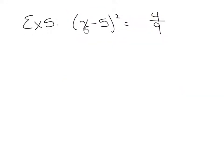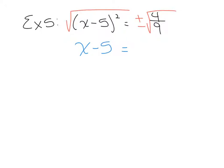Example 5: solve using the square root method. We have (x−5)² = 4/9. The square is isolated, which you should always check before applying the radical. We put the radical on the fraction — don't be alarmed, it is a perfect square fraction. The radical cancels the exponent. The square root of 4/9: square root of 4 is 2, square root of 9 is 3, so this gives us ±2/3.